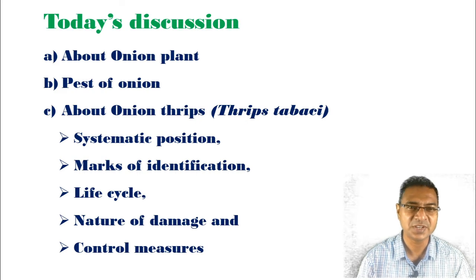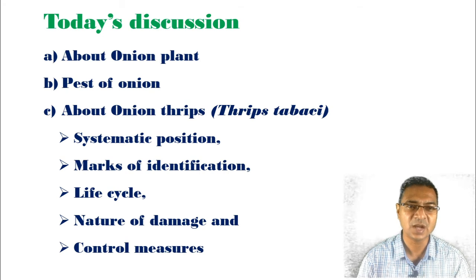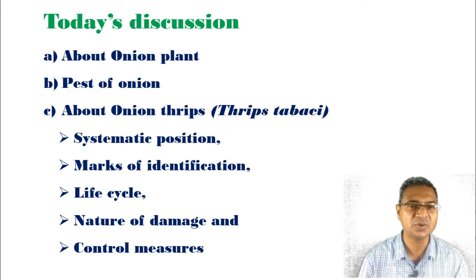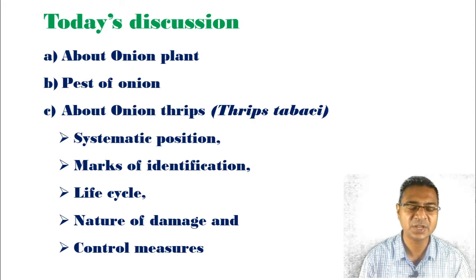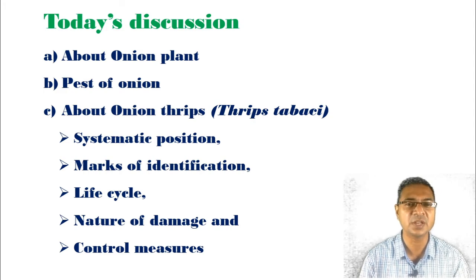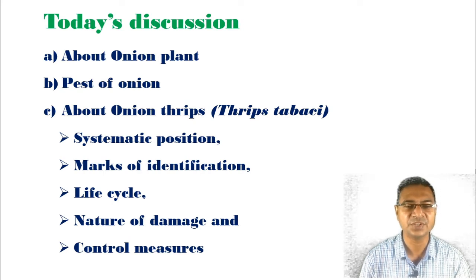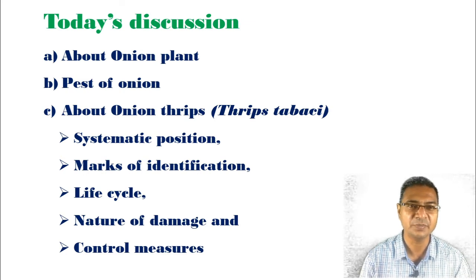Some of the points associated to this topic to be focused here: about the onion plant, then the pest of the onion, and the third part is the onion thrips, that is Thrips tabaci. Step-by-step, we will focus on the systematic position of onion thrips, then the host plant, marks of identification, life cycle, nature of damage, and control measures.